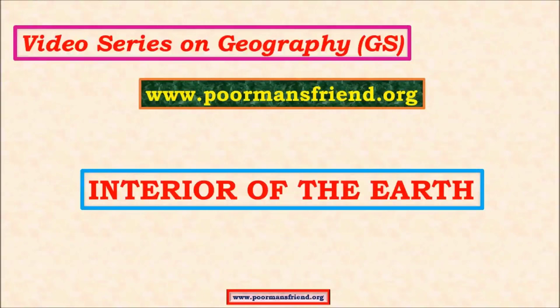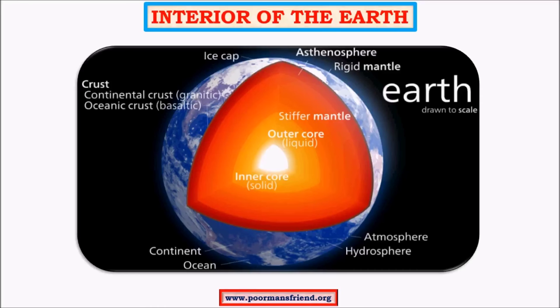Hello friends, welcome to this video series on geography. My name is Manjunath and this is my blog where you can find all the text files. In my previous video I explained about the universe and solar system. In this video I'll begin with the interior of the earth, or internal structure of the earth, covering core concepts of geomorphology. These concepts are important for both prelims and mains. Earth is made up of concentric layers — crust, mantle, outer core, and inner core — each with varying physical and chemical properties.